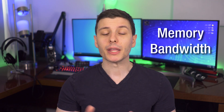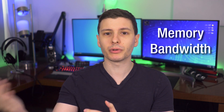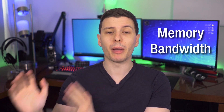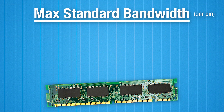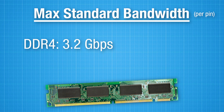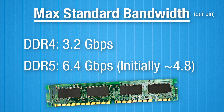The first difference is memory bandwidth — basically how fast data can be retrieved from or put onto the memory stick. With the maximum standard specifications, DDR4 has a maximum bandwidth of up to 3.2 gigabits per second per pin. With DDR5, the maximum spec has up to 6.4 gigabits per second per pin, although at first it'll probably be around 4.8 gigabits per second — still a 50% increase. Eventually as RAM improves, it'll get up to 6.4, double the bandwidth.